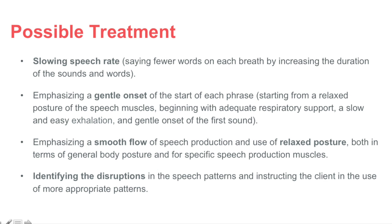Possible treatments for neurogenic stuttering include slowing the speech rate by saying fewer words on each breath and increasing the duration of sounds and words; emphasizing a gentle onset at the start of each phrase; emphasizing a smooth flow of speech production and use of a relaxed posture for both the general body and speech muscles; and identifying disruptions in speech patterns and instructing the client in the use of more appropriate patterns. Other traditional stuttering modification and fluency shaping techniques include biofeedback, pacing techniques, delayed auditory feedback, respiratory training, and relaxation exercises.